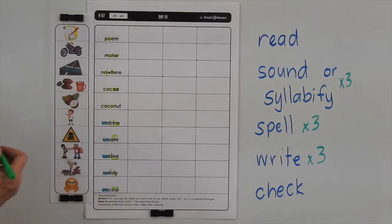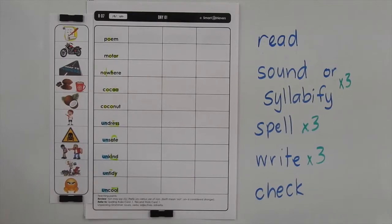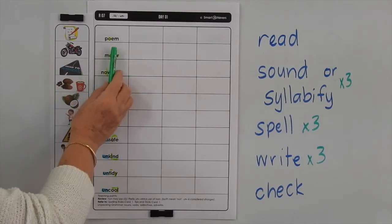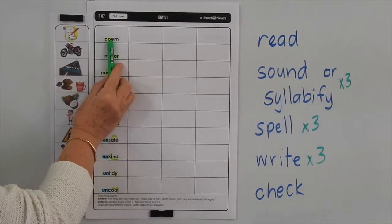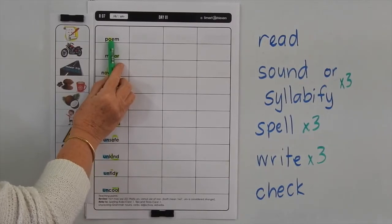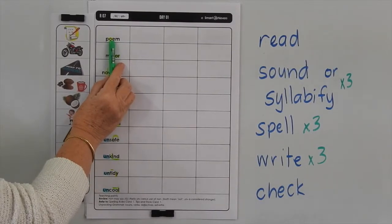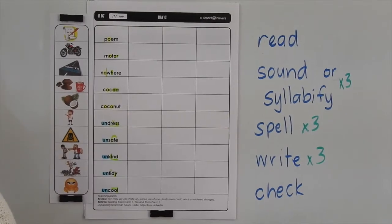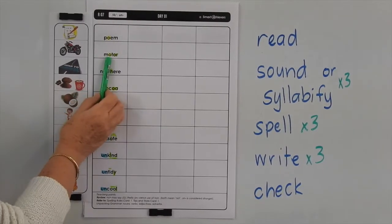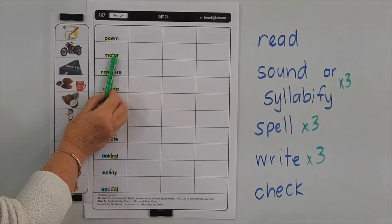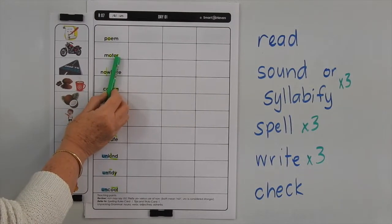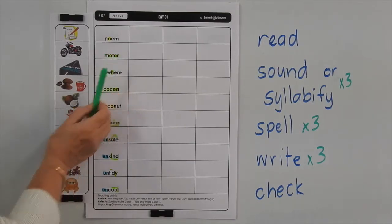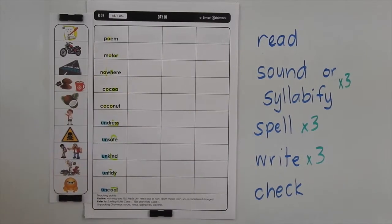A poem is a verse which may contain some rhythm and rhyme, and a poet is a person who writes poems. A motor is a powered machine and if someone has to fix a motor, it's usually a mechanic.